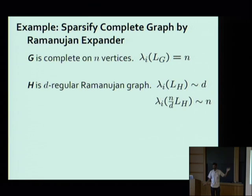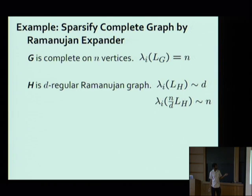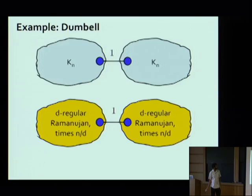In particular, if I take my Ramanujan graph and multiply it by N over D — blow up all the edge weights by N over D — all the eigenvalues are now around N. So this ratio is basically around 1. The key takeaway is that expanders, particularly Ramanujan graphs, are good sparsifiers for the complete graph.